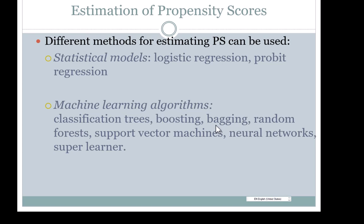For example, McCaffrey with RAND developed the TWANG package in R, which uses generalized boosted modeling specifically for propensity score analysis.